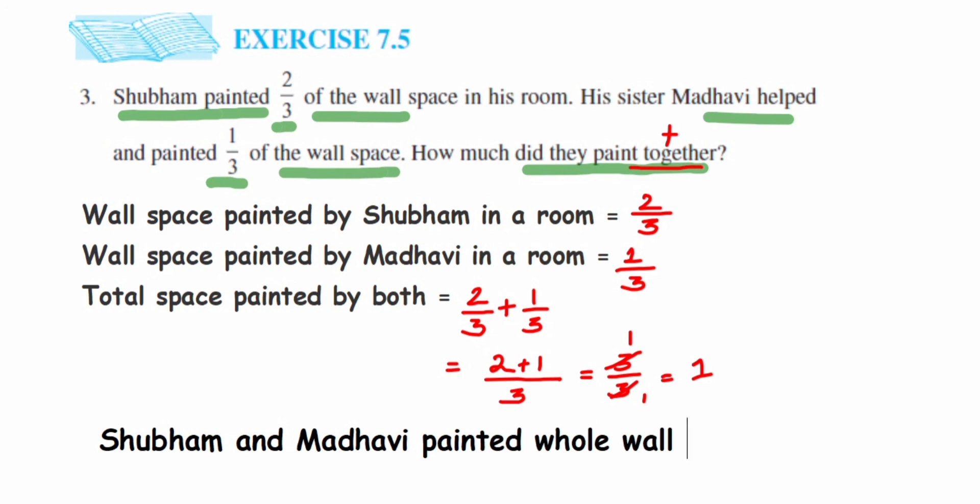So one means a whole thing here, so it will be Shubham and Madhavi painted whole wall together. You can add or can just stop here. So that's it, this is the question here. I hope it's clear now. In case you have any questions or doubts, you can drop a comment below. Thank you so much for watching.